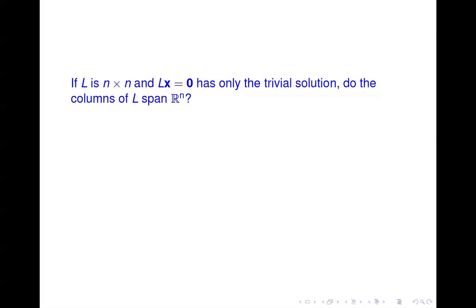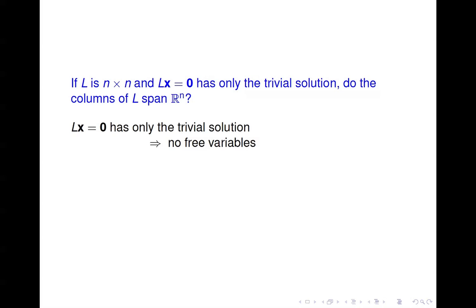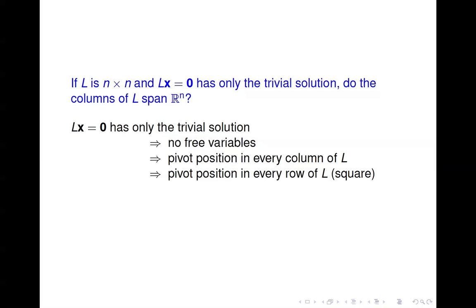Another example: if L is n-by-n and Lx = 0 has only the trivial solution, do the columns of L span R^n? If Lx = 0 has only the trivial solution, there are no free variables, so there's a pivot position in every column of L. Since L is square, that also means a pivot position in every row — and therefore the columns span R^n.